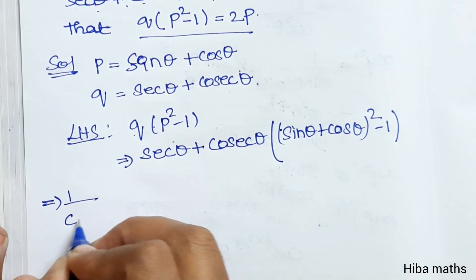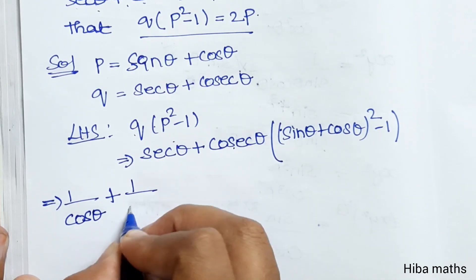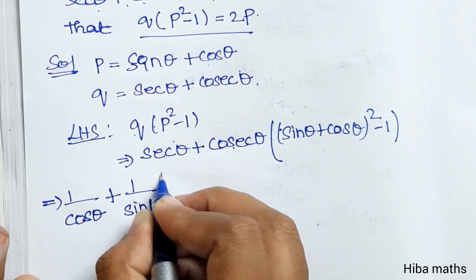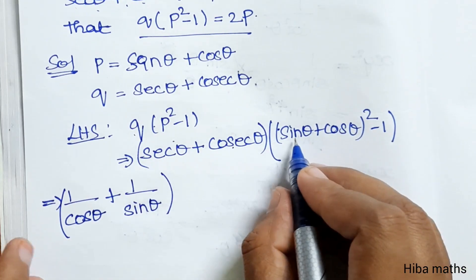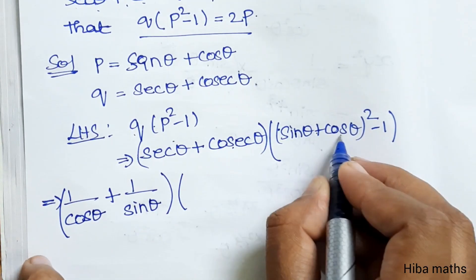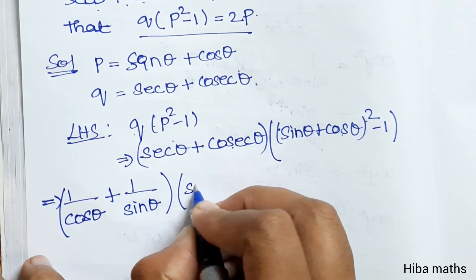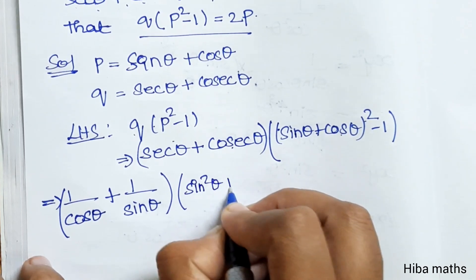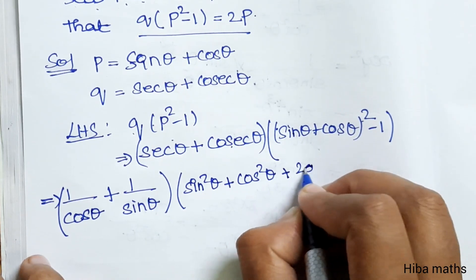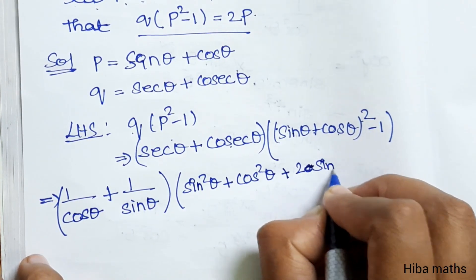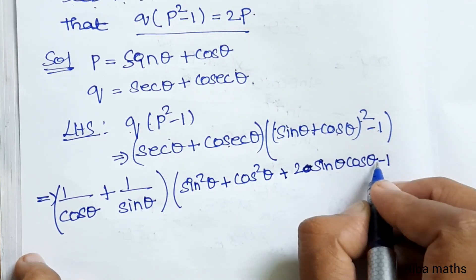sec θ = 1/cos θ and cosec θ = 1/sin θ. Now expanding (A + B)² — that is A² + B² + 2AB — we get sin²θ + cos²θ + 2 sin θ cos θ, and then minus 1.